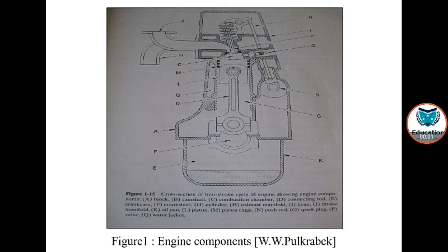In this figure, you can see the four-stroke engine cycle and engine components, such as: block, camshaft, combustion chamber, connecting rod, crankcase, crankshaft, cylinder, exhaust manifold, head, intake manifold, oil pan, piston, piston rings, push rod, spark plug, valve, and water jacket.